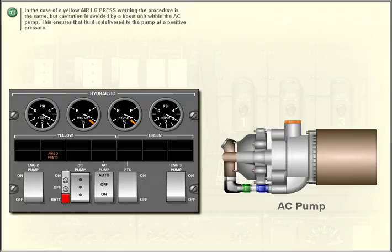In the case of a yellow air low pressure warning, the procedure is the same, but cavitation is avoided by a boost unit within the AC pump. This ensures that fluid is delivered to the pump at a positive pressure. Turn off engine 2 pump switch.